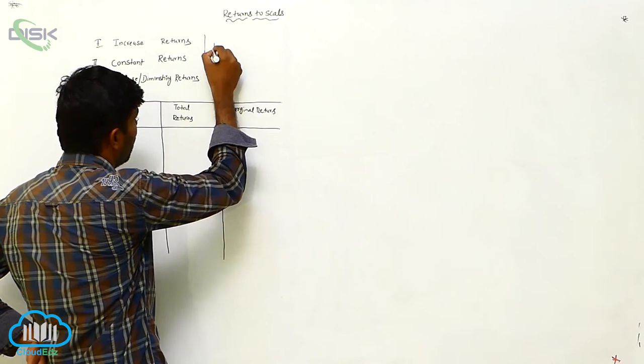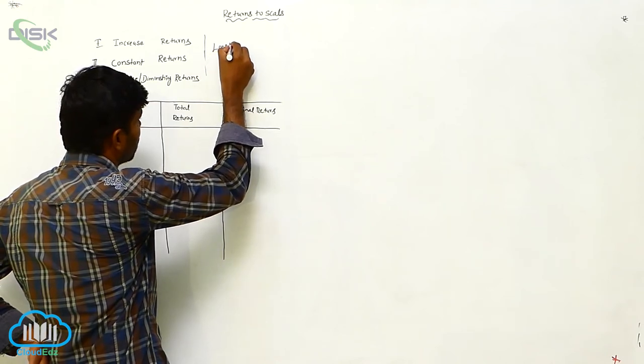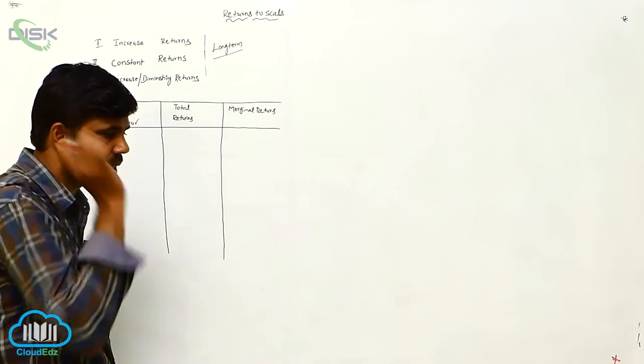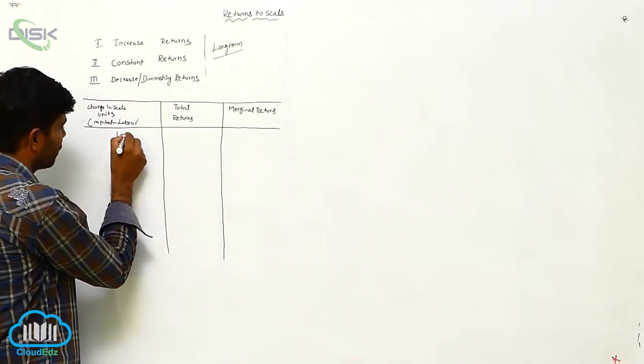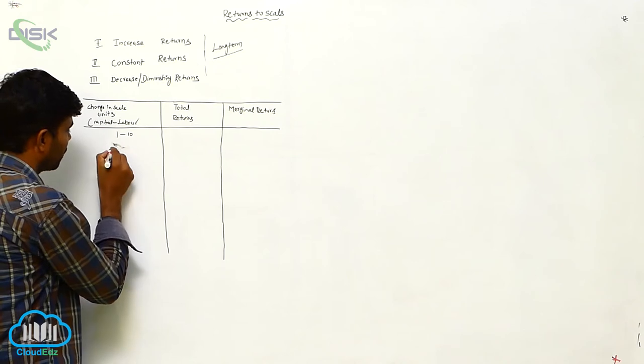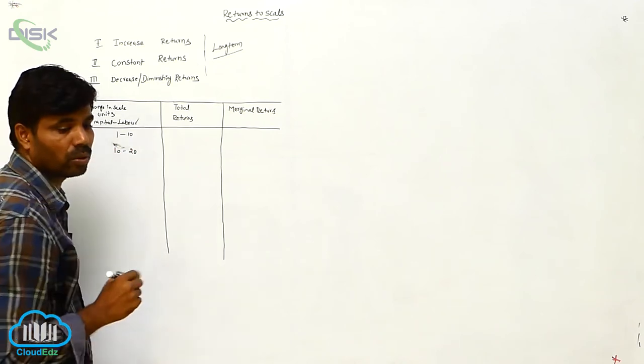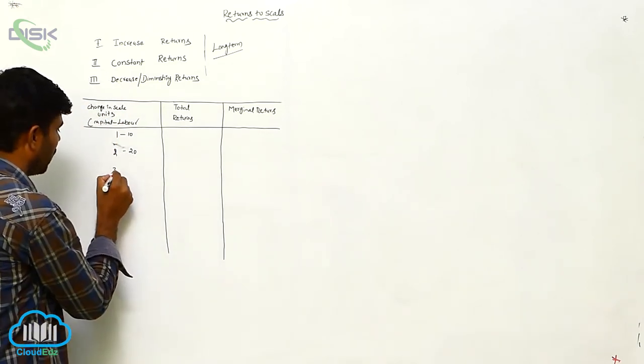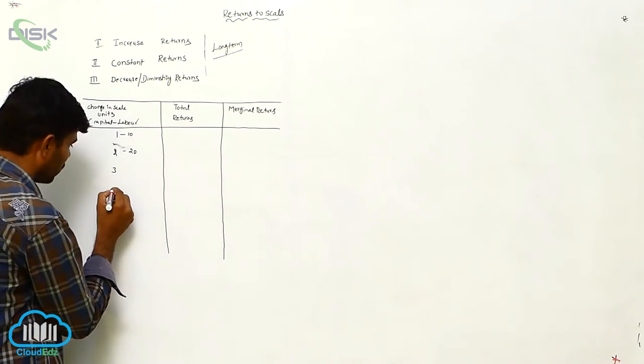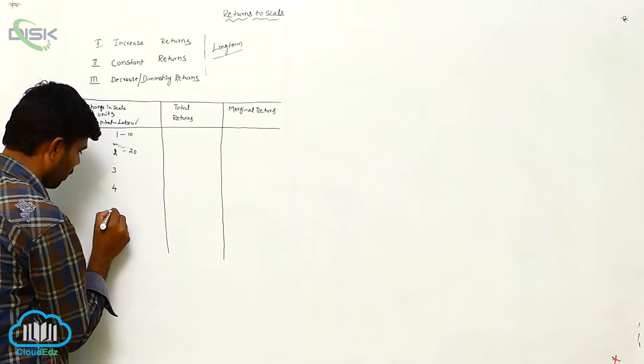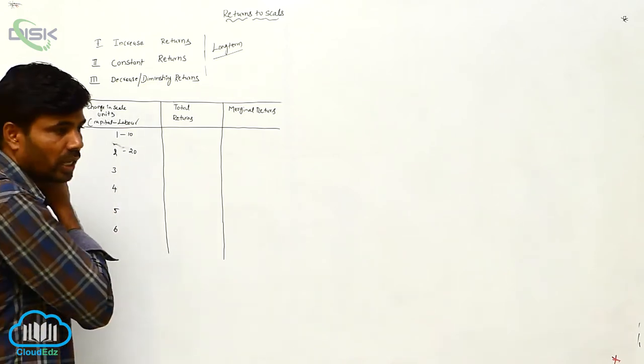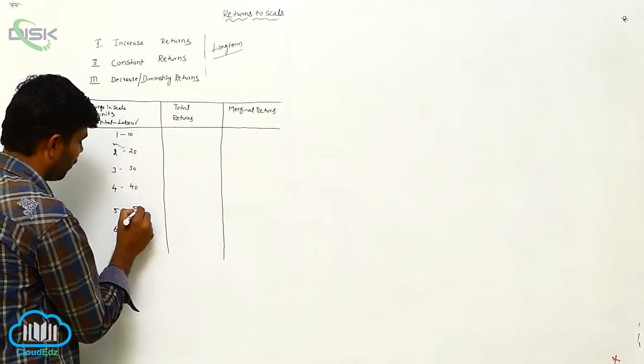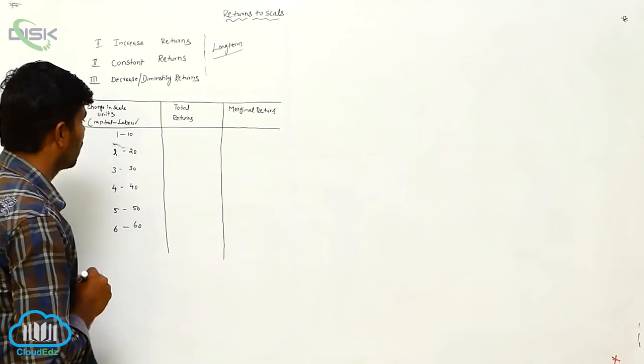It is belonging to long term. We are going to consider 1 to 10, 10 to 20, or 2, 3. Up to how many labors? We are going to consider 6. Please consider 4, 5, 6. 10, 20, here 30, 40, 50, 60. Capital minus labor.